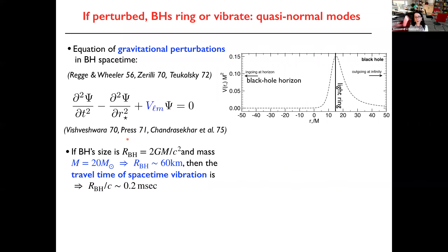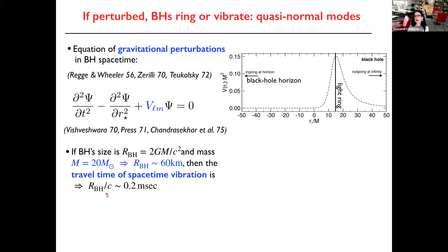You could ask: what is the frequency typically associated with this quasi-normal mode of a black hole? As a rule of thumb, you can take the travel time or spacetime vibration. If you take a black hole of total mass 20 solar masses, that would correspond to 60 kilometers, and if you compute r divided by c — the typical travel time of these spacetime vibrations — you get something on the order of a fraction of a millisecond. This is a rough calculation, but in fact it's the only thing you can do, because a black hole has no matter.